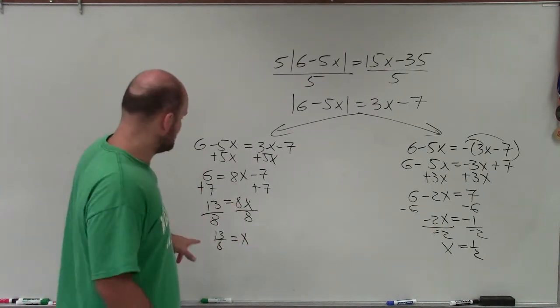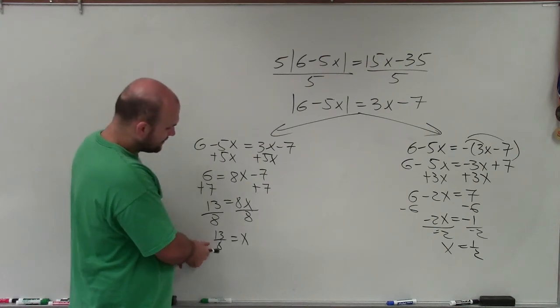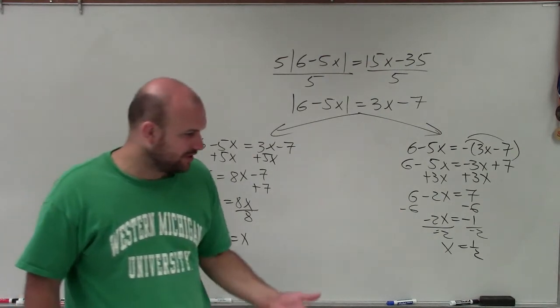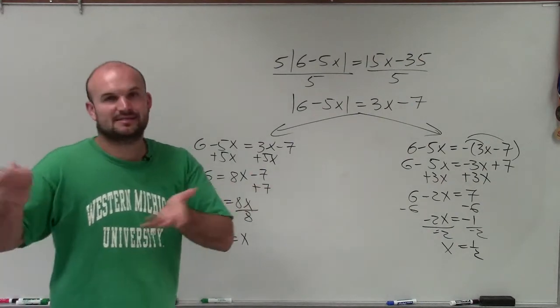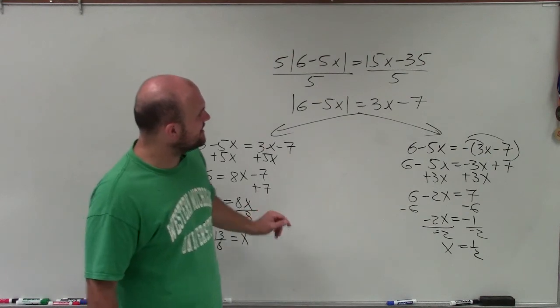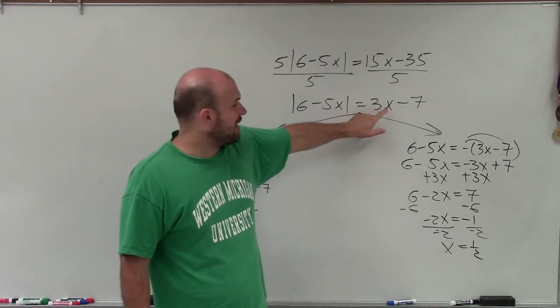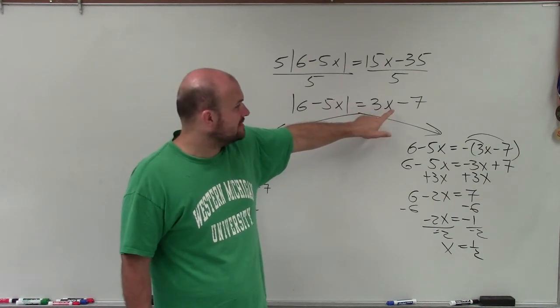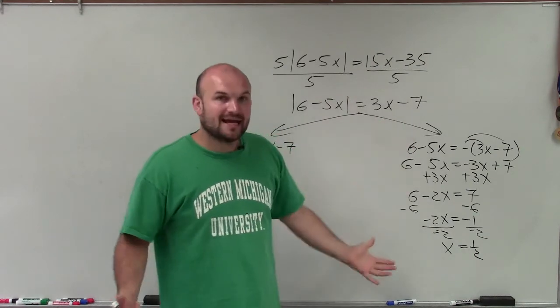However, what I notice is both of these are less than 2. 13 over 8 is probably like 1.6, something around there. And so what I notice is if I multiply any number less than 2 for x, and then when I subtract 7 is going to make it negative.